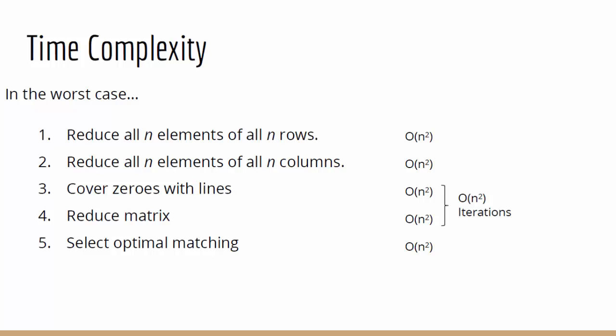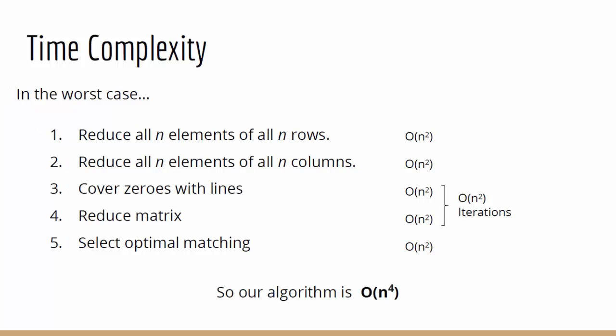Covering and reducing our matrix also requires us to look at every element, in order to work out the minimum number of possible lines and to act on those elements accordingly. This gives us a combined complexity of n squared for steps 3 and 4. But since steps 3 and 4 are iterative, there is a chance we can run them n squared times. This gives us a total complexity of n to the power of 4.